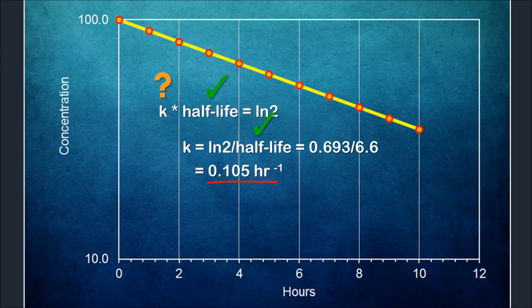Having estimated the elimination rate constant, we can apply this value to the exponential equation and estimate the plasma concentration at any time point of interest. In this case, we can estimate that if the initial concentration is 100, the concentration at 10 hours will be 34.9.